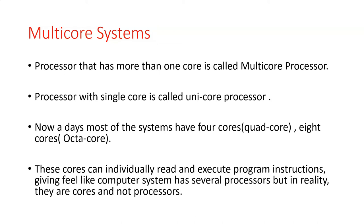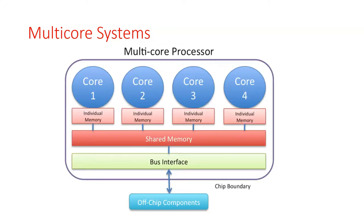But nowadays most of the systems have quad-core and octa-core. Quad-core means the processor contains four cores. If the processor contains eight cores, we call it octa-core.